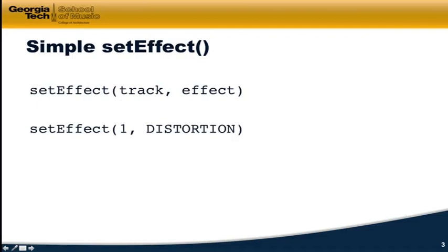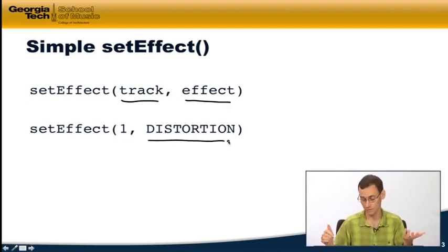I want to start with the simplest things that we can do with setEffect. SetEffect is an unusual function. You can define functions in Python that can have different numbers of arguments depending on what you want to do with them. SetEffect can have two arguments, like in the example we see here, but it can also have as many as six. So we're going to start with a simple two-argument version and build our way up to more complex operations. In this simple incarnation, there's just two arguments: first is a track we want to add the effect to, and then the second one is the name of the effect. All the effects in EarSketch are referenced by constants, like DISTORTION is the constant for distortion.